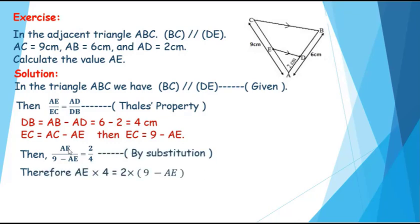By making cross multiplication, we get AE times 4 equals 2 times 9 minus AE. Then 4AE equals 18 minus 2AE.